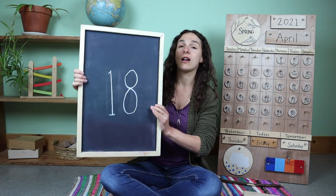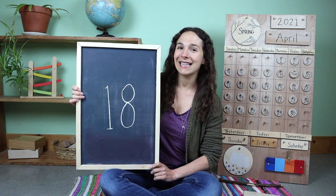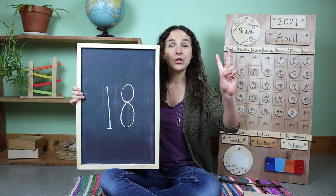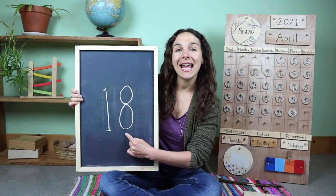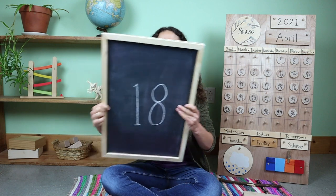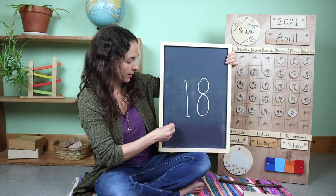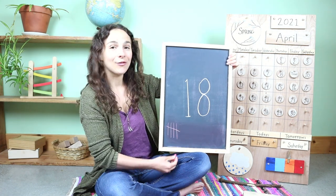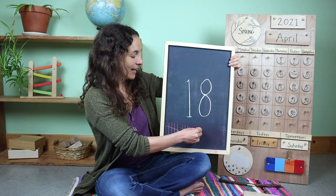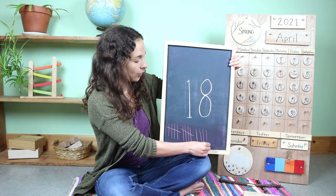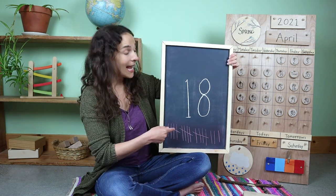Today will also be the last day talking about this double digit number. Do you remember what number we've been talking about this week? Eighteen — that's right. When you write the number 18, you write two numbers: first the number one, then the number eight. Eighteen. Will you count 18 tally marks with me? One, two, three, four, five goes across, six, seven, eight, nine, ten goes across, 11, 12, 13, 14, 15 goes across, 16, 17, and one more makes 18. Eighteen tally marks.